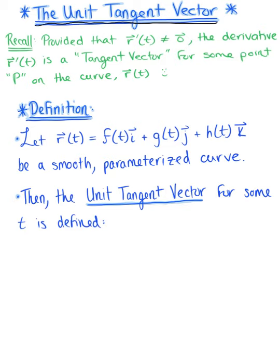The unit tangent vector is a vector with a magnitude of 1 formed by dividing the tangent vector by its length. So here we go.